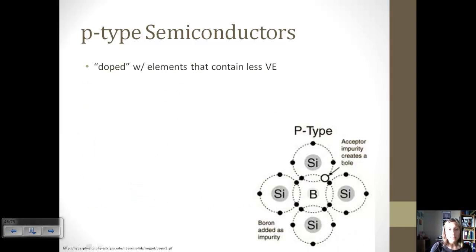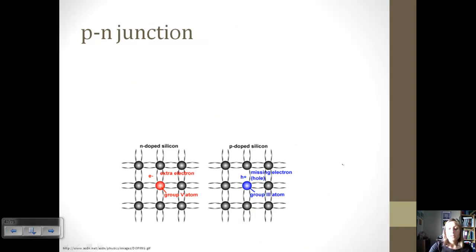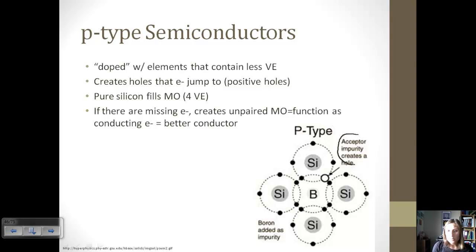And the other type of semiconductor is a P-type semiconductor. Where N-type had elements with more valence electrons, P-type has elements with less valence electrons. And basically this creates empty spaces, or holes, that electrons can jump to, and so that facilitates the flow of electrons. So pure silicon fills a molecular orbital model because it has four valence electrons. If we take one away, now we're creating an unpaired molecular orbital, and so this functions as conducting electrons, which makes it a better conductor. Because now instead of having an extra electron that's free to move, we have a hole where other electrons will go to. So let's just take a look at the picture real quick. Here we had our impurity was boron, and then here's the hole that other electrons can jump to.